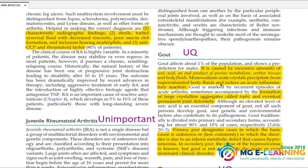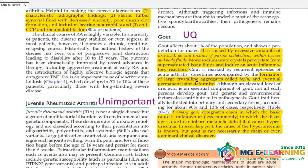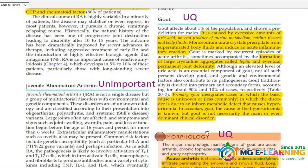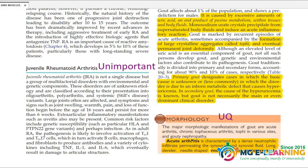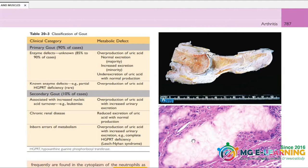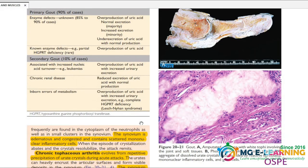Gout is important — you don't want to skip it. Classification of Gout table: Primary Gout with enzymatic defects, Secondary Gout — in which conditions it occurs and metabolic defects. This is a good way to study it.